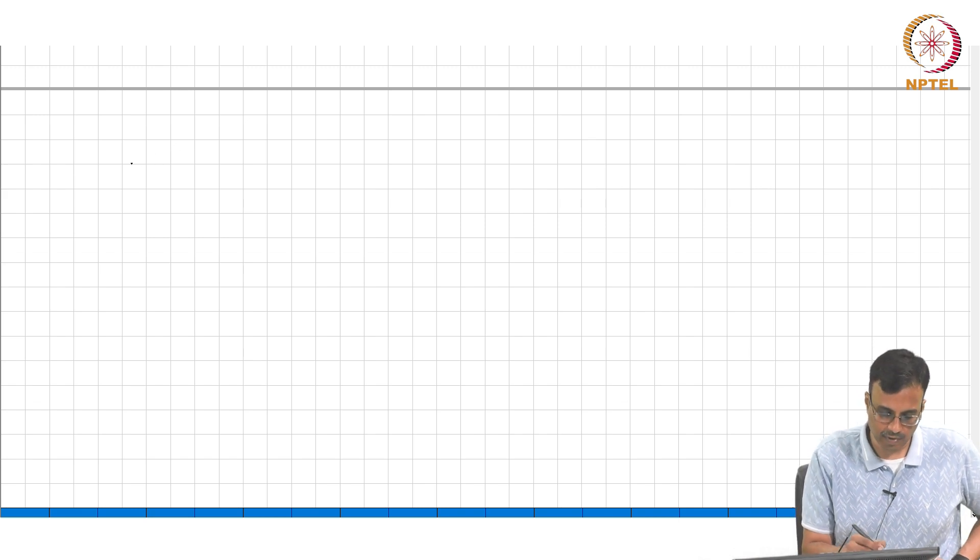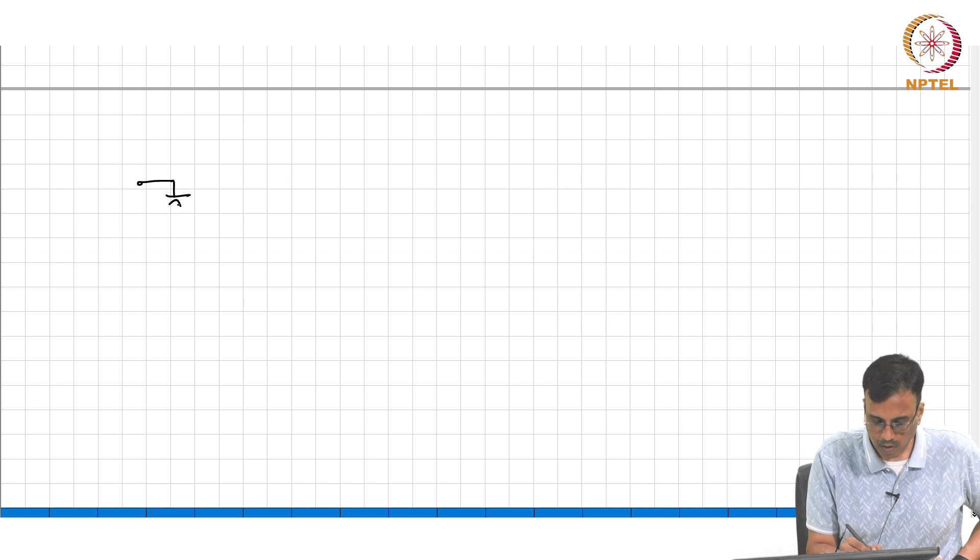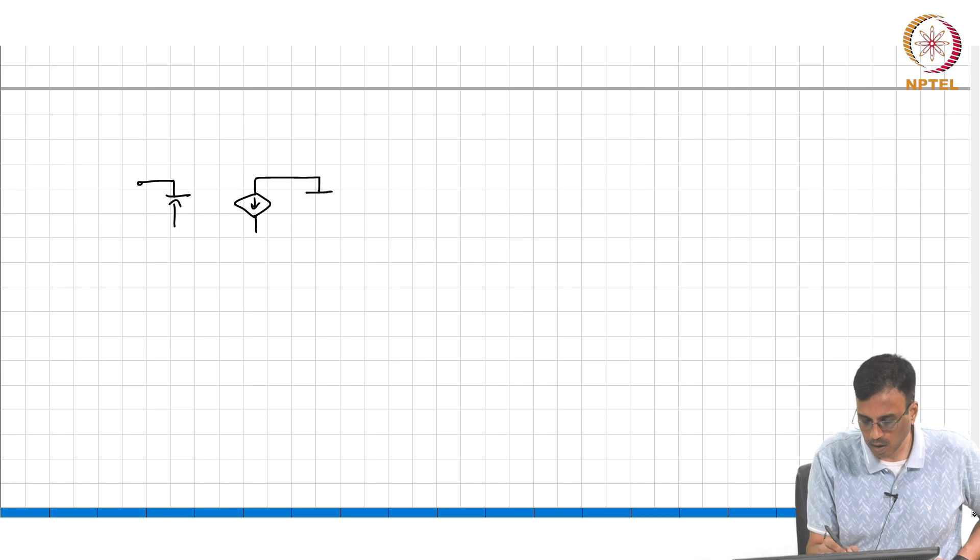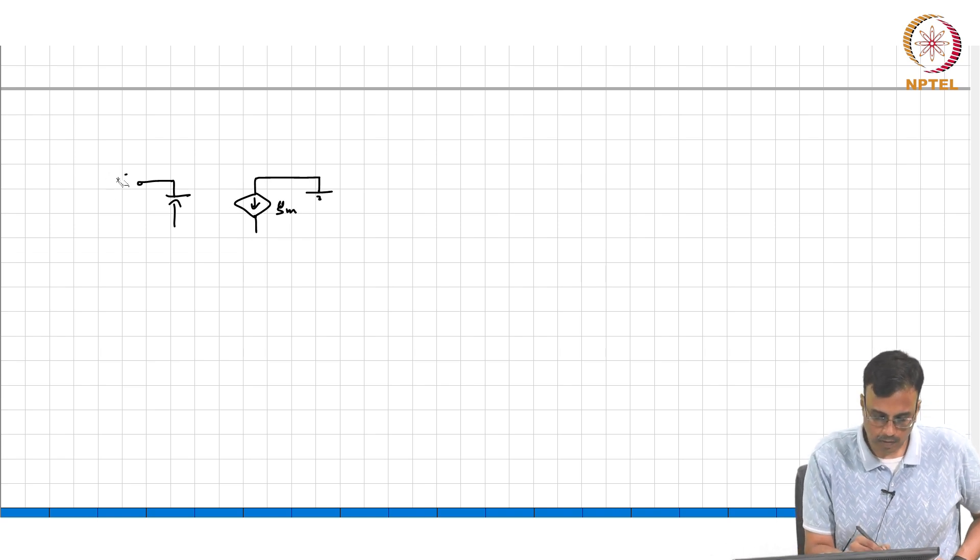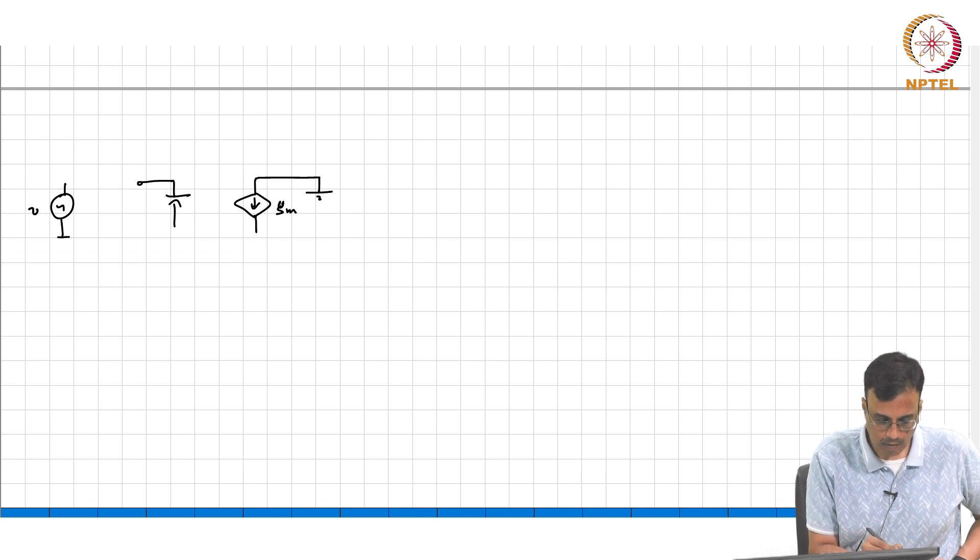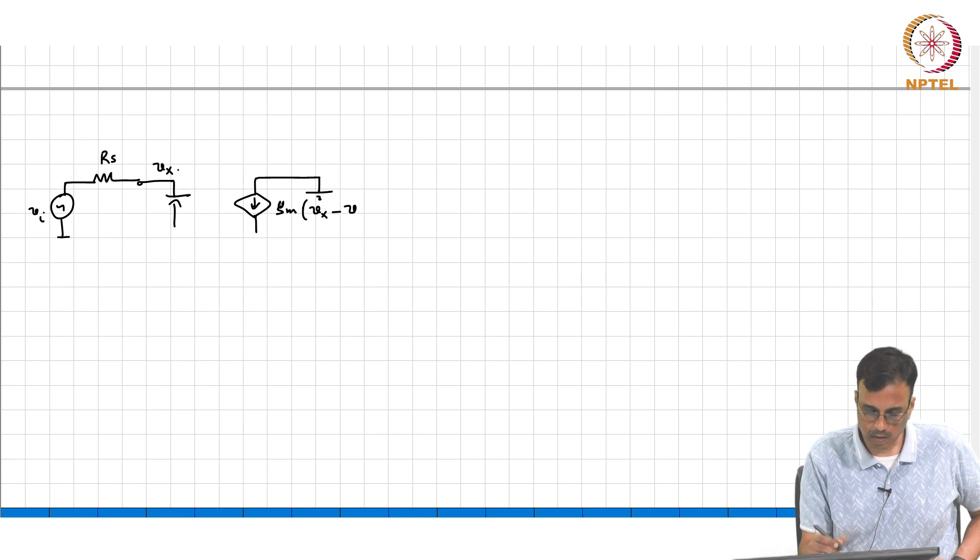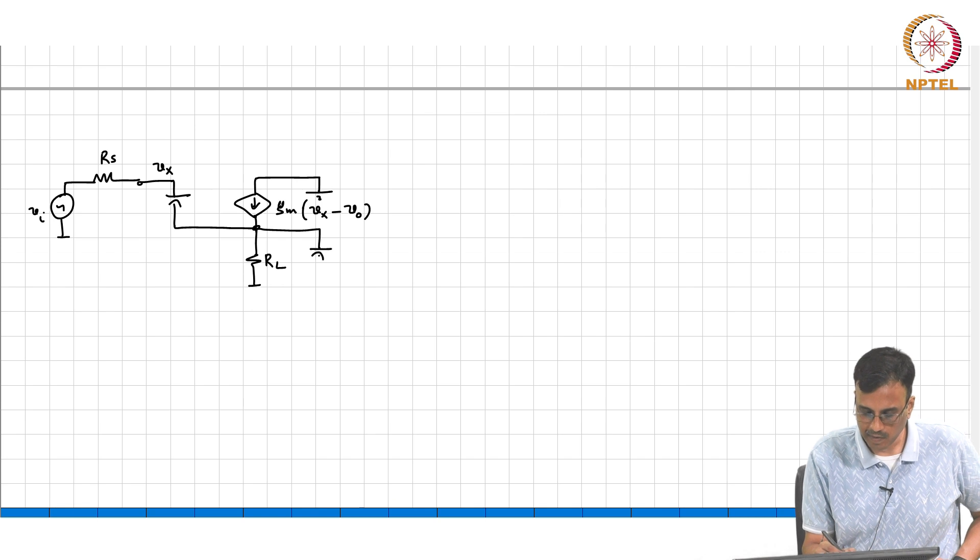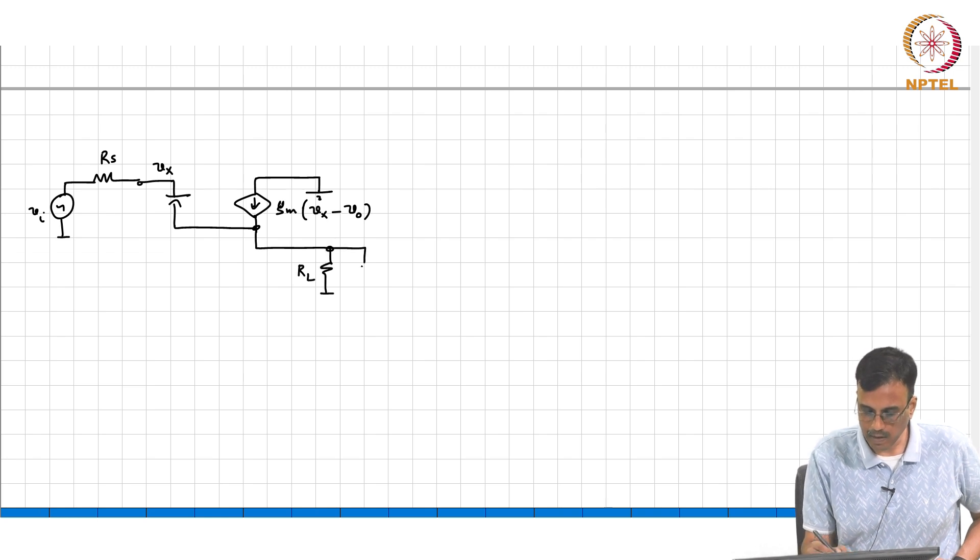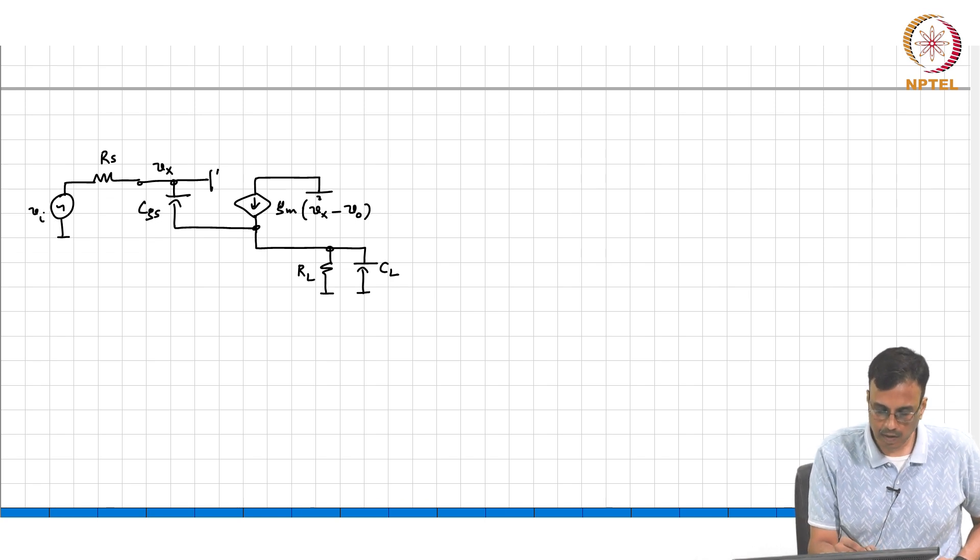Then let us take a look at the other amplifiers that we have seen, namely the common drain. So this is RL and CL, this is CGS and this is CGD.